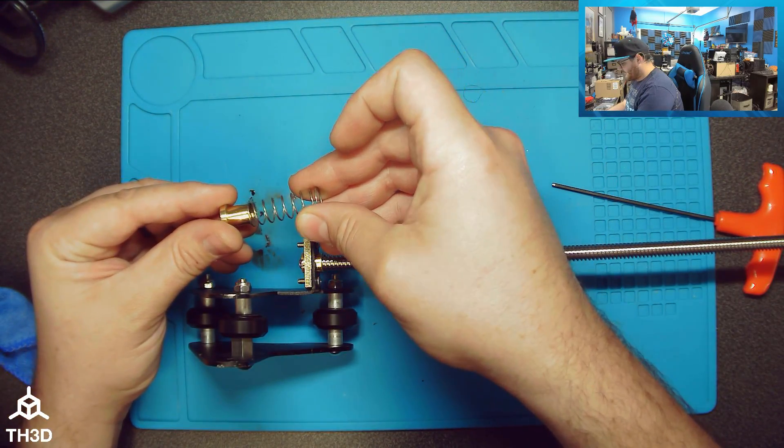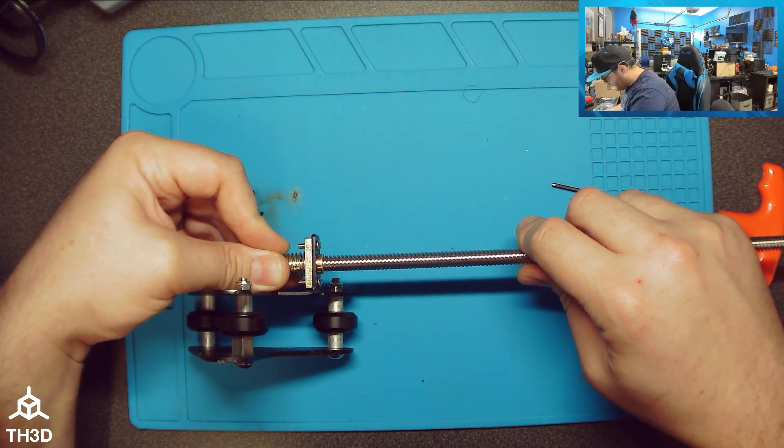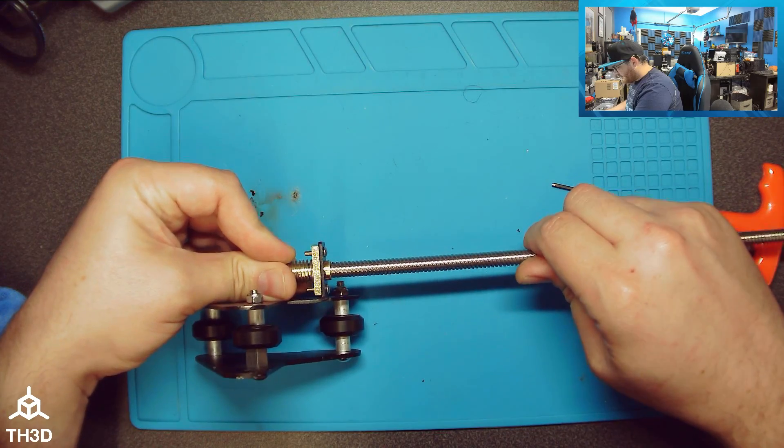So put your spring on, push it over the end here, make sure it's lined up, and then thread your lead screw in.